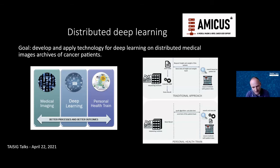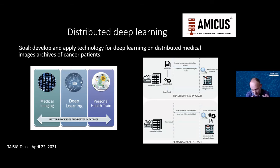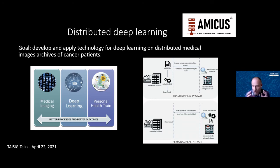In most cancer cases, you don't have a huge database like we have for brain tumor patients. To apply machine learning, you need to combine datasets from different hospitals — but hospitals are not eager to share data since it is privacy sensitive. Our next project aims to develop technology that enables distributed deep learning on imaging data without the data ever leaving the hospital.